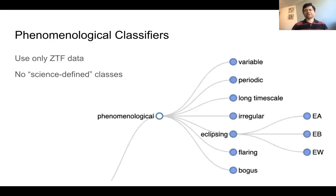Here are how the phenomenological classifiers look. Here we use only the ZTF data, and these are not science-defined classes, so they are based on how the data look. Whether an object is a variable or not, whether an object is periodic or not, whether the timescale seems to be a long one or not, whether the light curve is irregular and so on. And even here we can have some hierarchies.